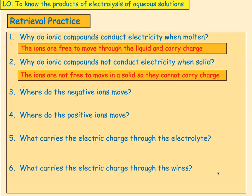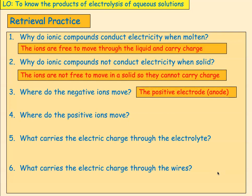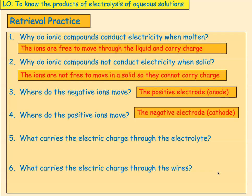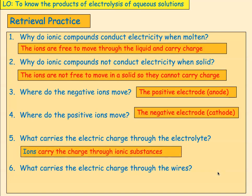Where do the negative ions move to? They move to the positive electrode, the anode. Where do the positive ions move? They move to the negative electrode, the cathode. What carries the electric charge through the electrolyte? The electrolyte is an ionic substance, so it's ions. We need to remember this because a lot of people get this wrong and say electrons. In an ionic electrolyte, it is ions carrying the charge.